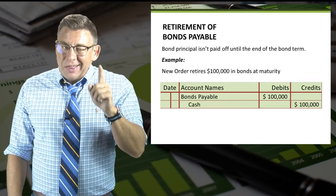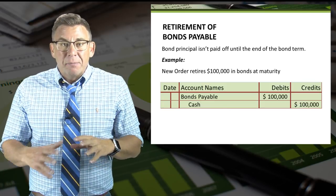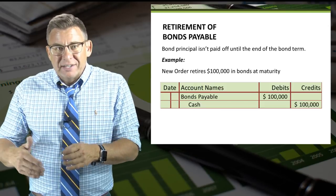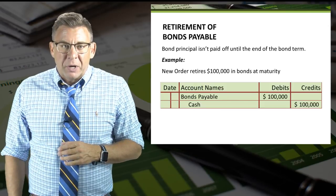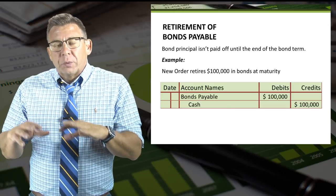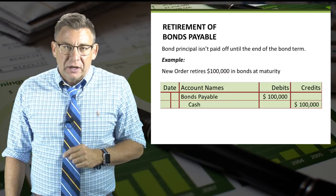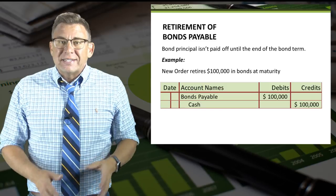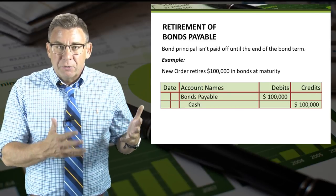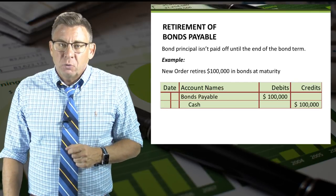Bonds, like other debts, need to be paid back. Unlike many other debts, bonds don't pay off the principal amount until the end of the bond term. So in this example, New Order retires $100,000 of bonds at maturity. The journal entry is a debit to bonds payable — paying off the liability and removing it from the books — and a credit to cash for $100,000.